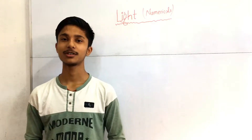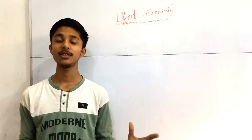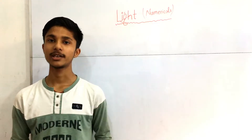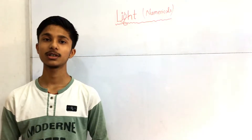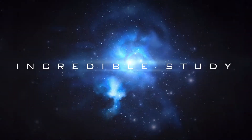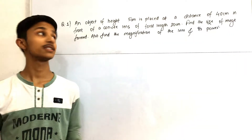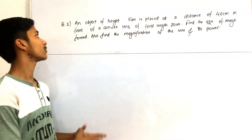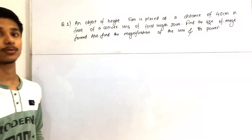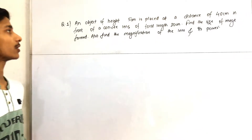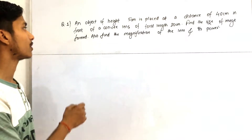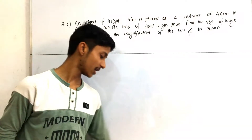Hello everyone, welcome to Incredible Study. Today in this video we are going to solve numerical problems on the light chapter. Our first question says: an object of height 5 centimeter is placed at a distance of 40 centimeter in front of a convex lens of focal length 20 centimeter. Find the size of image formed, the magnification of the lens, and its power.